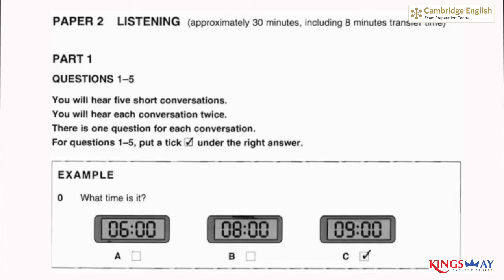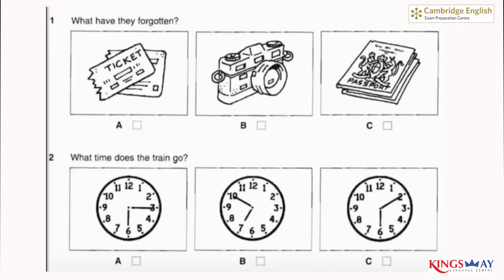Now we are ready to start. Look at question one. One. What have they forgotten? I've got the passports here. And the tickets are in my bag. What about the camera? Oh no, I've left it at home. And I really wanted to take some holiday photos.